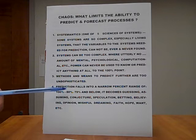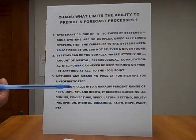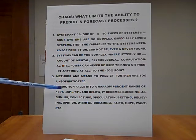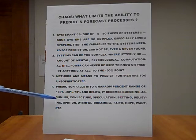The third reason is that the methods and means to predict further are too unsophisticated. The fourth reason is prediction falls into a narrow percent range of 100% to 80%, 79% and below. It becomes guessing, assuming, conjecture, speculation, betting, believing, opinion, wishful dreaming, faith, hope, want, etc.